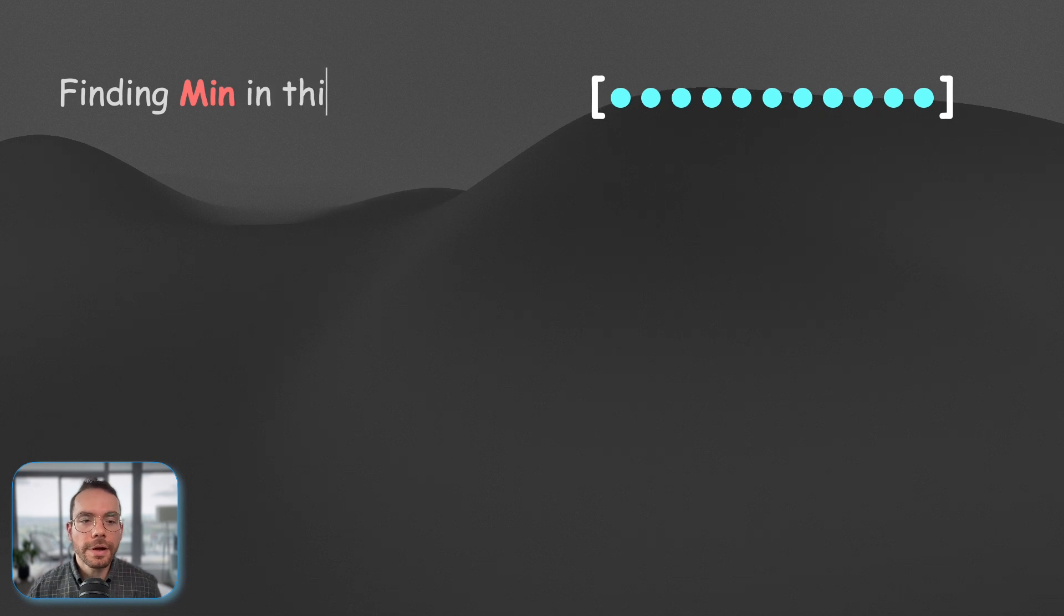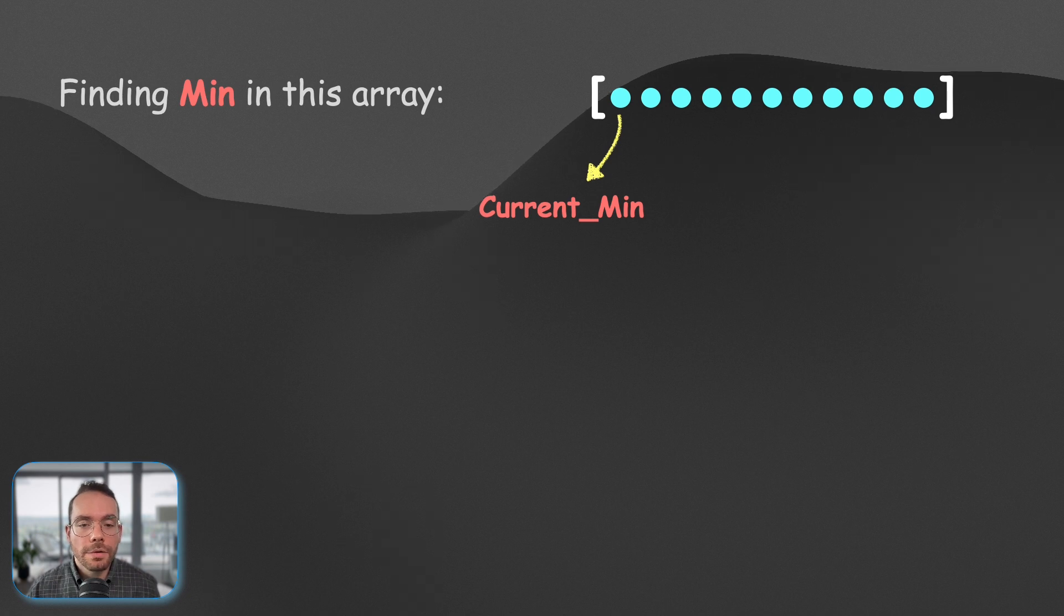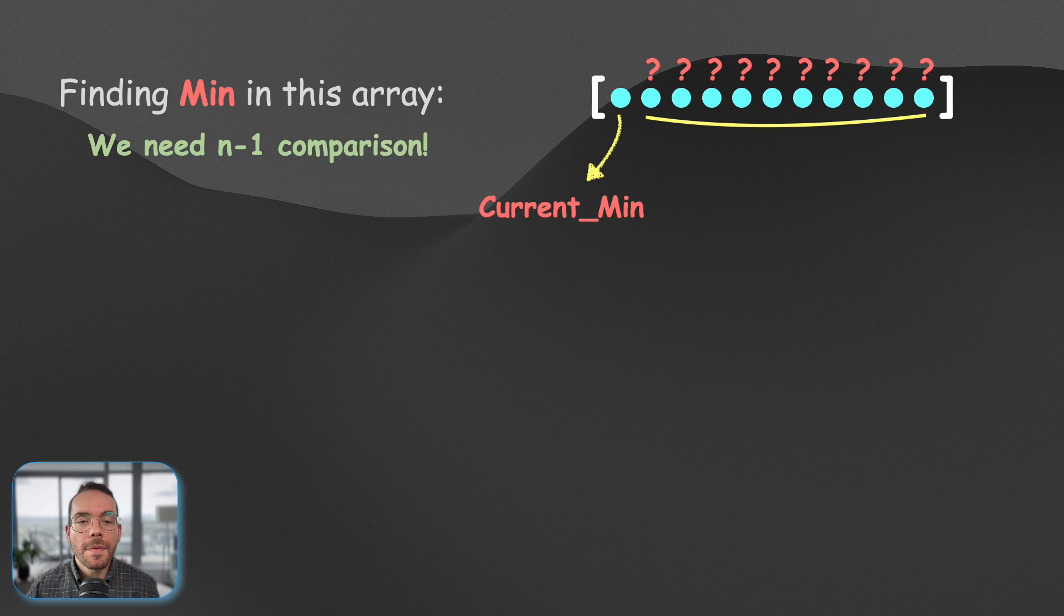Okay, so this is how this is going to work. We will try to find the minimum in this array, and the first thing we're going to do is we're going to set the first element to our current max or current min, and then we will consider all other candidates. We will compare this with every other element in this array, and at the end of the day, we will have the global min.